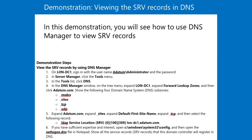Select the record: _ldap Service Location (SRV) 0 100 389 londc1.adatum.com. Step 6: If you have sufficient expertise and interest, open C:\Windows\System32\config and then open the netlogon.dns file in Notepad to learn all the service records (SRV records) that this domain controller will register in DNS.